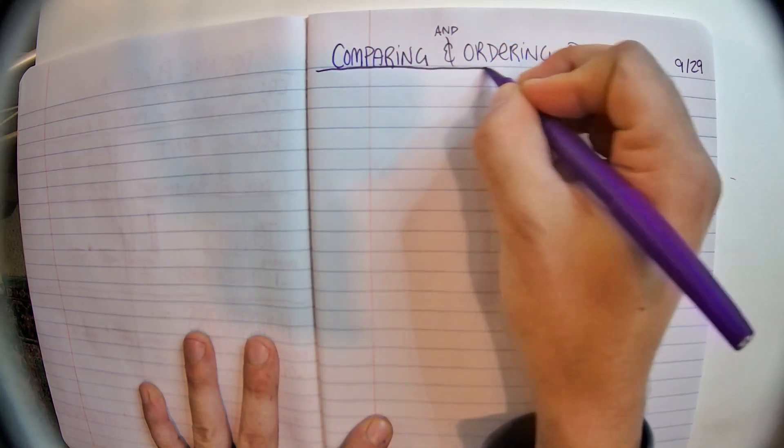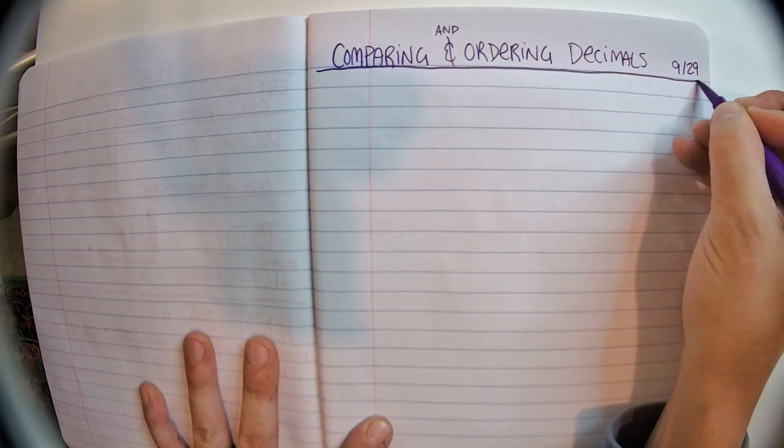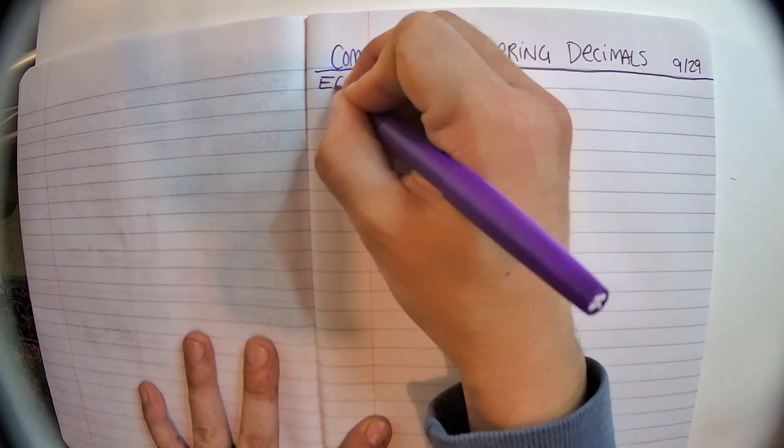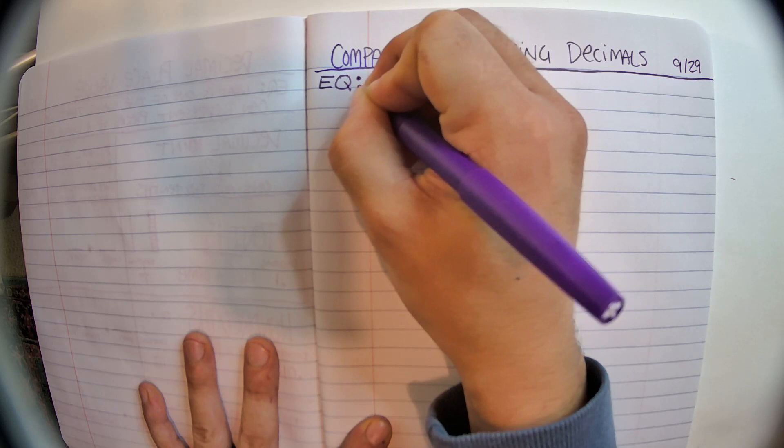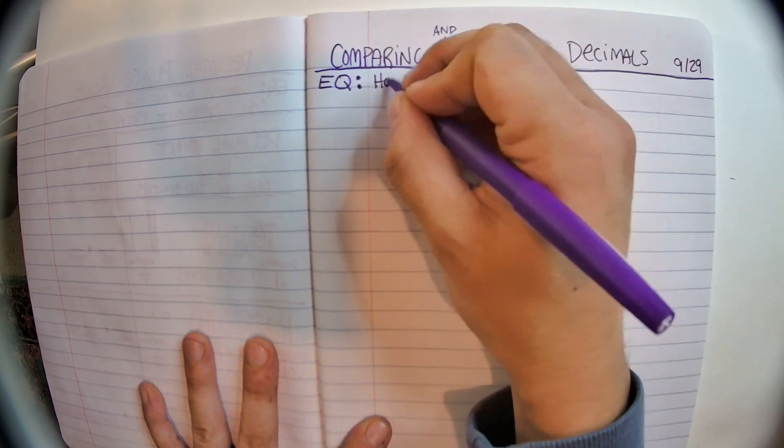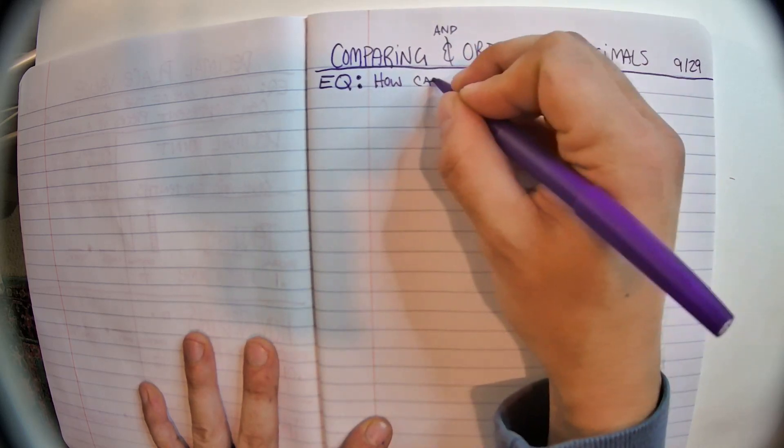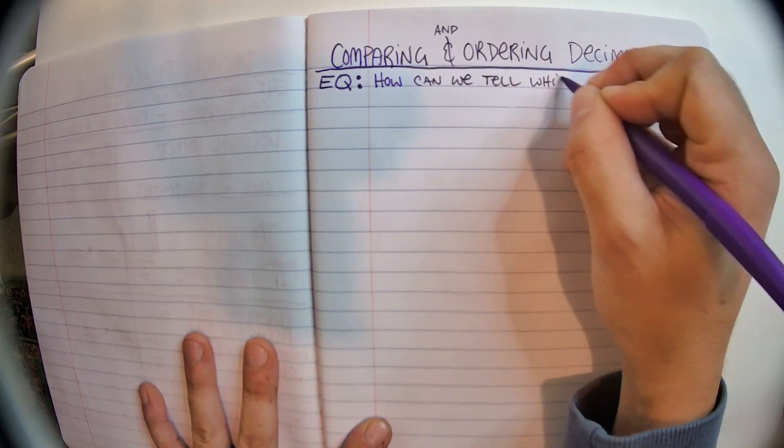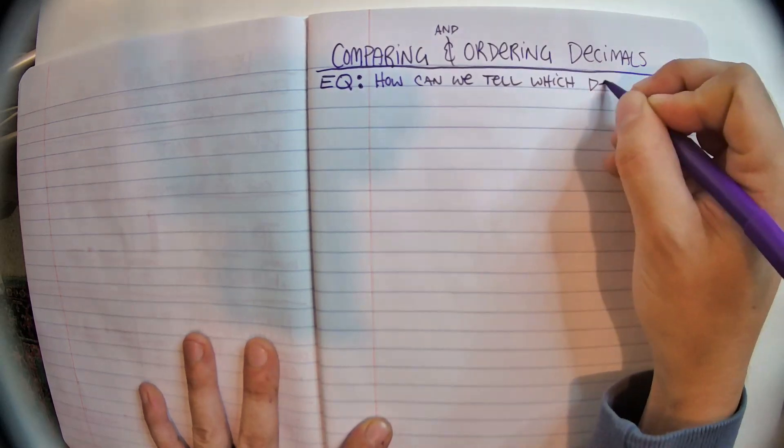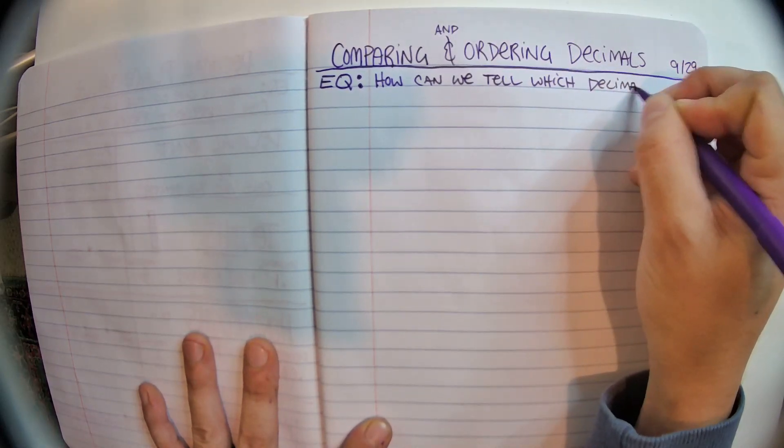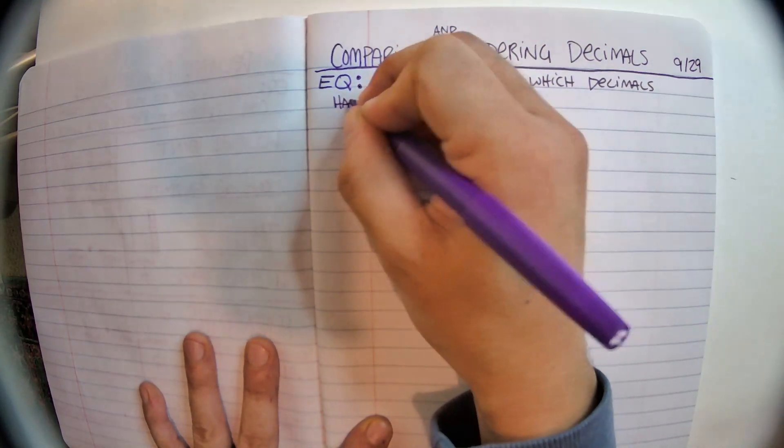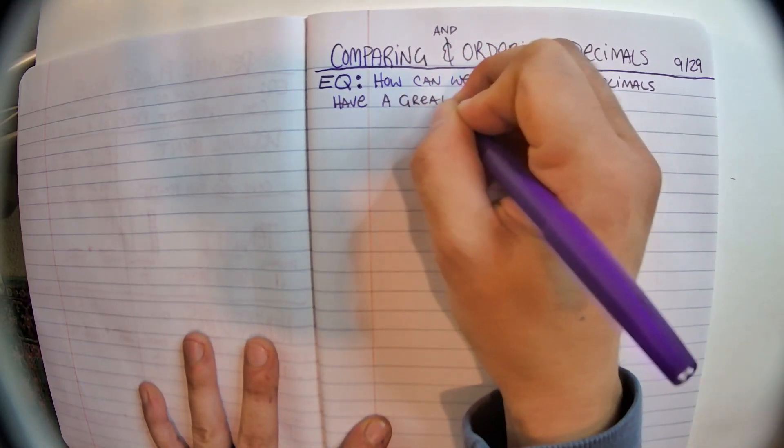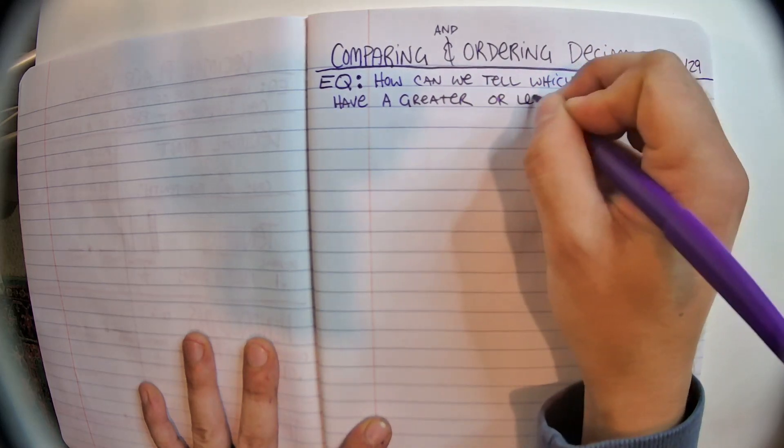So then we're going to go ahead and put a line right there. And let's make our essential question for the day. Our essential question is: How can we tell which decimals have a greater or lesser value?